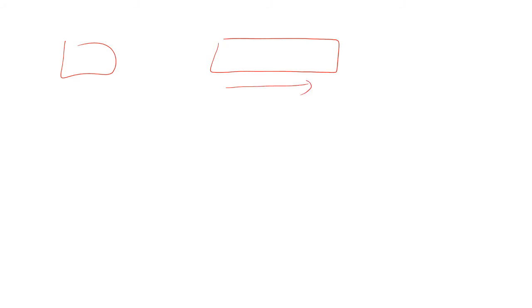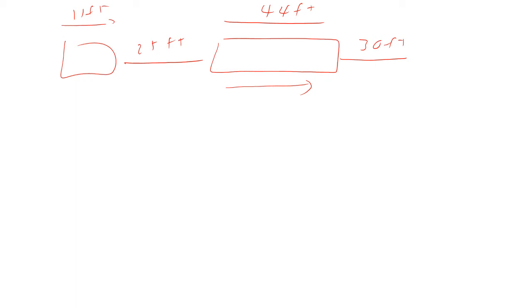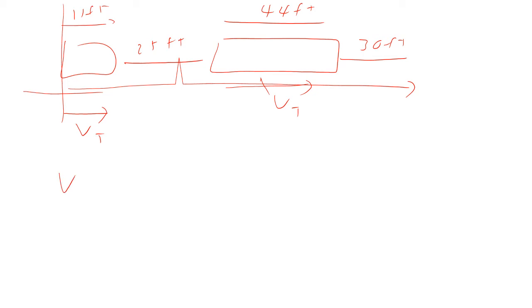The easier approach: the car is actually moving faster than the truck. So if we place a coordinate axis that moves at the same speed as the truck, the truck is not moving relative to that axis. We just have to figure out how far the car goes in that moving frame. The velocity of the car in this frame is the difference between the car's velocity and the truck's velocity: 95.3 feet per second minus 73.3 feet per second, which equals 22 feet per second.